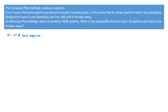We're looking at the production of 5000 aspirins, so n equals 5000. The probability of any aspirin being faulty is 5 in every 1000, so p equals 5/1000, which is 0.005 — the probability of a success. Consequently, the probability of an aspirin not being faulty, the probability of a loss, is 1 minus 0.005, which is 0.995.